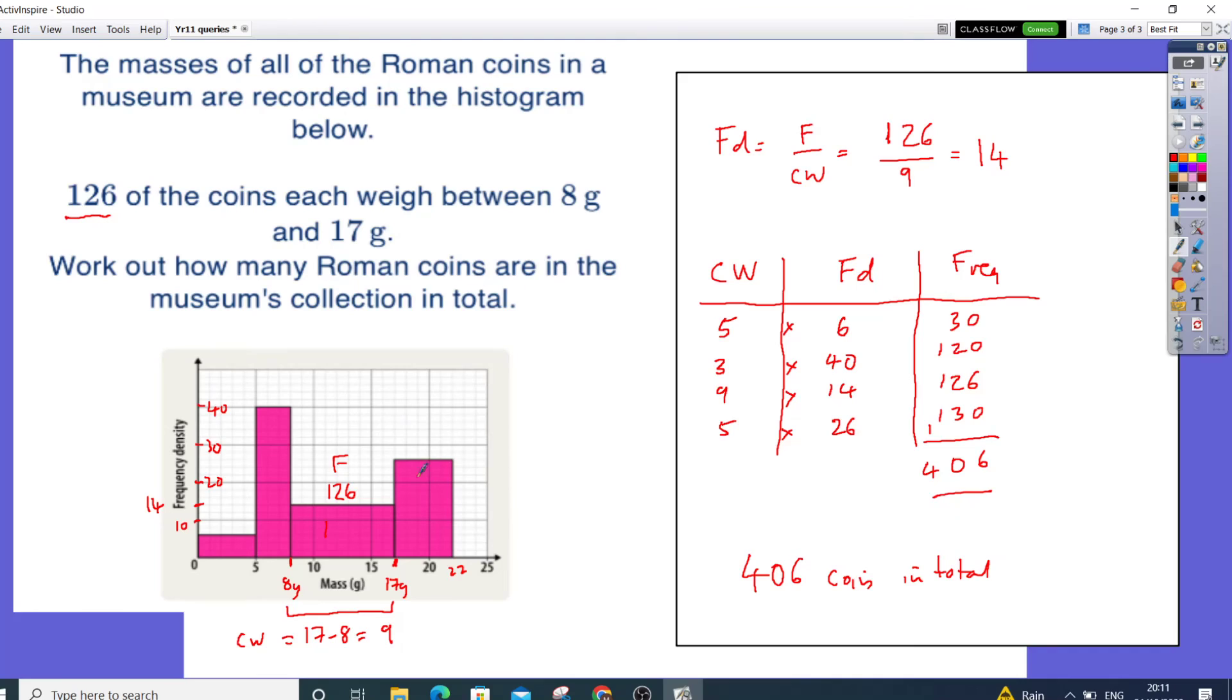So very important that you work backwards with the information you got. You've got to get the exact scale of the frequency density. And from there, you can then establish this table and work out the frequency of each bar. And once you've got the frequency of each bar, you add all them up and you get the total frequency, which is the total number of coins.